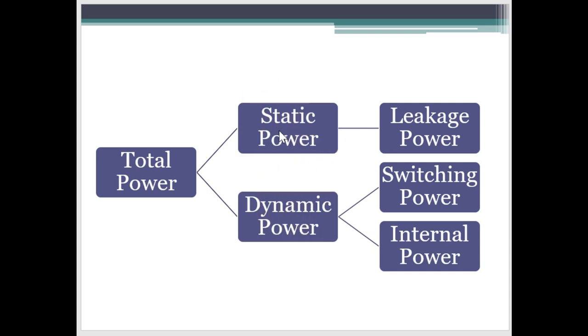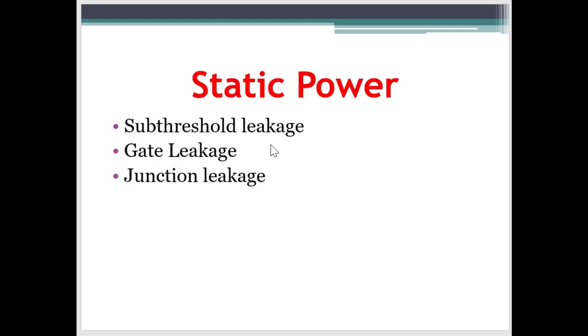The static power dissipation is mainly in the form of leakage. That's why it is also called leakage power. Now, we can have various types of leakage in a CMOS circuit. Let's look into them one by one.